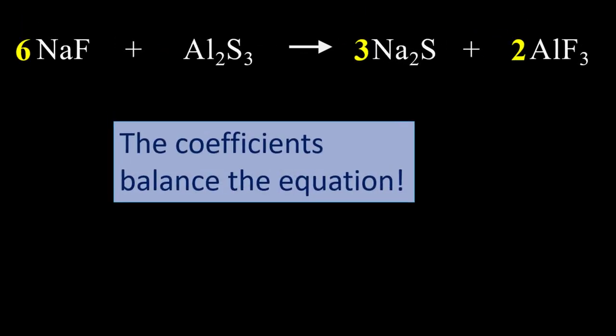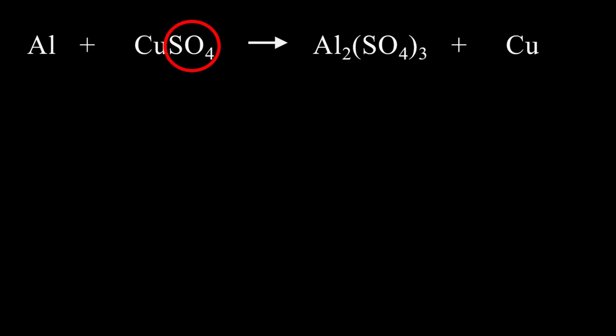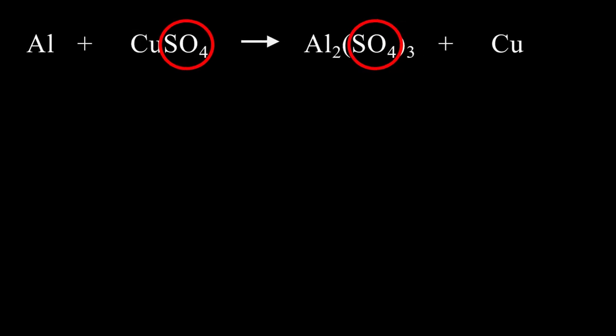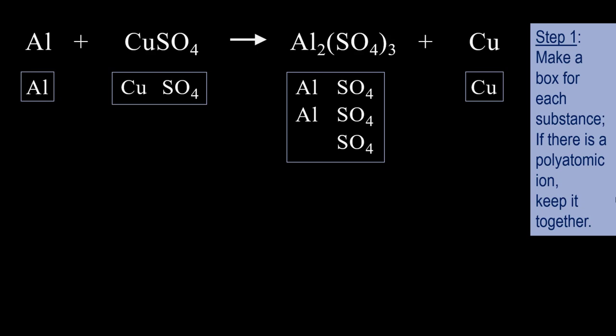The coefficients balance the equation. This last equation is given as a shortcut for counting polyatomic ions. If there is a polyatomic ion present, and it stays together on both sides of the equation, then it is counted as a single unit rather than breaking apart the atoms. So for step 1, you can see the SO4 is counted as a single unit, 1 on the left but 3 on the right.